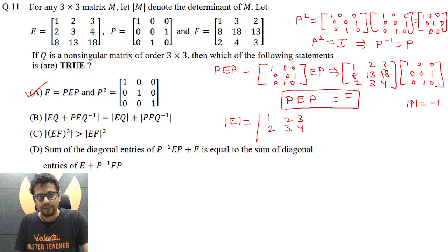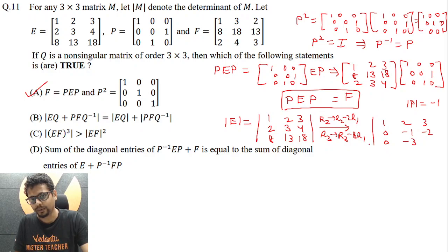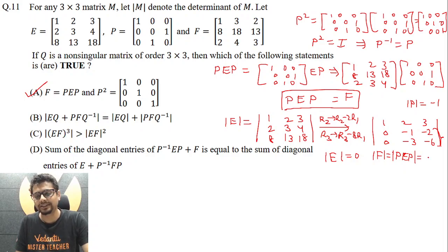The determinant of E uses the matrix [1 2 3 / 2 3 4 / 8 13 18]. To simplify, let R2 → R2 − 2R1 and R3 → R3 − 8R1 to create zeros. You get proportional rows, so the determinant of E is 0. Since F = PEP, det(F) = det(P)·det(E)·det(P) = 0 as well. So both det(E) and det(F) are 0.